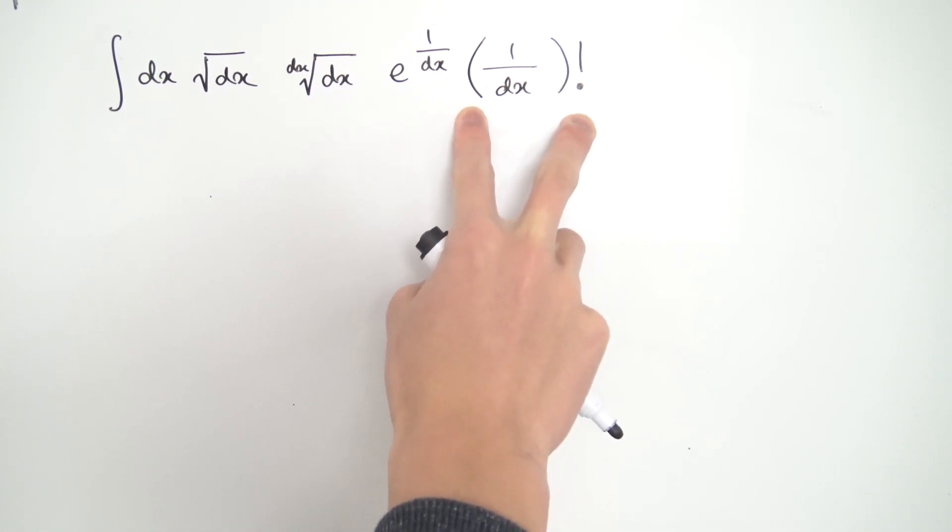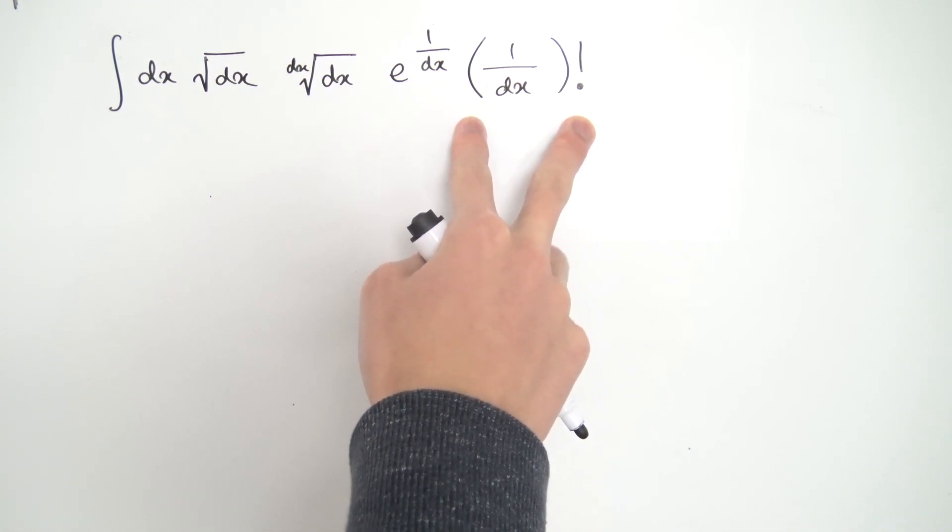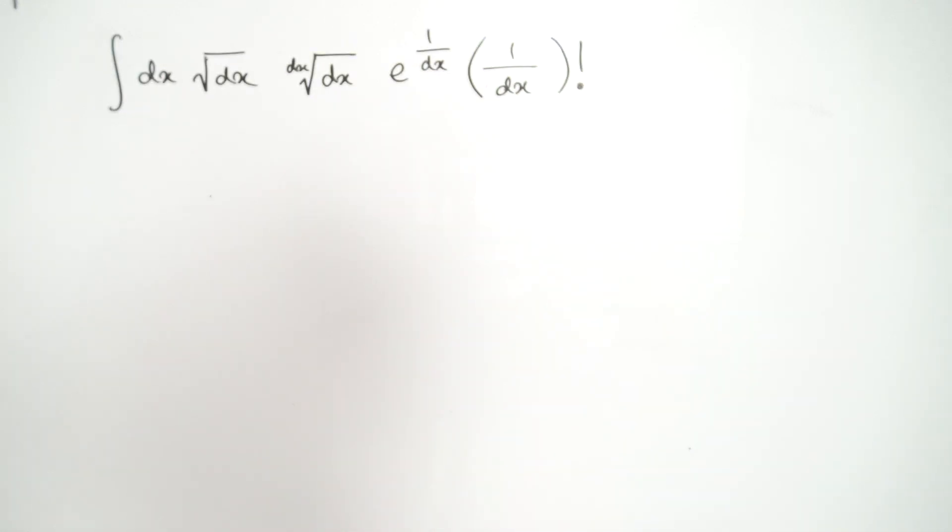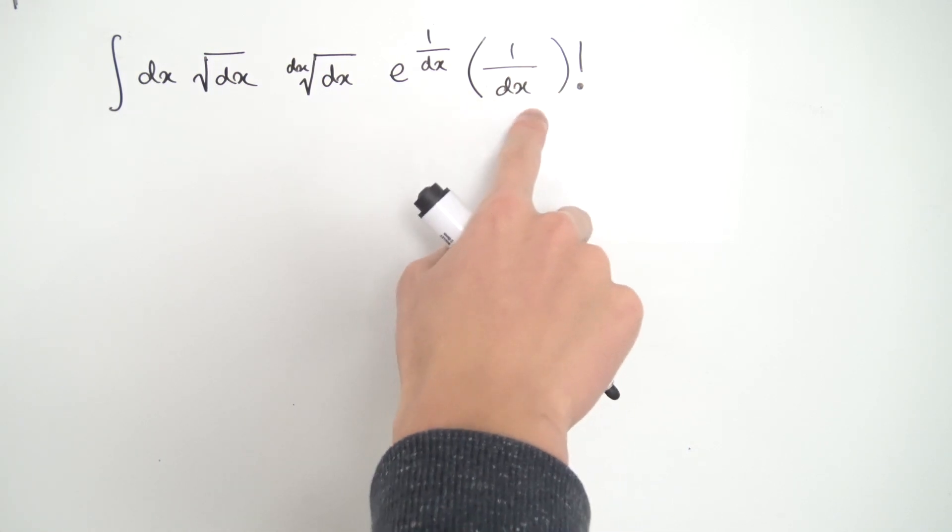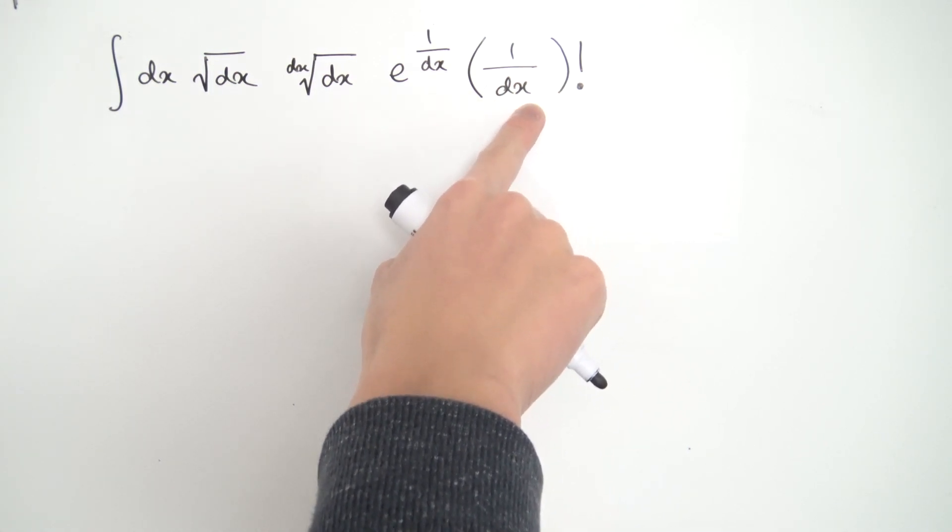So maybe you see it, if you have a keen eye you might know what I'm about to use, but if not it actually all has to do with this 1 over dx factorial. We're going to be employing some kind of approximation, because notice we have 1 over dx, and you can think about dx as just some kind of quantity that approaches 0.